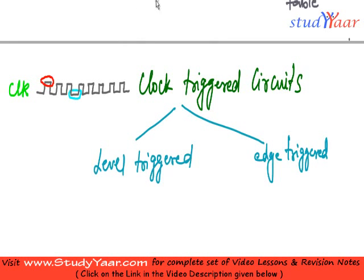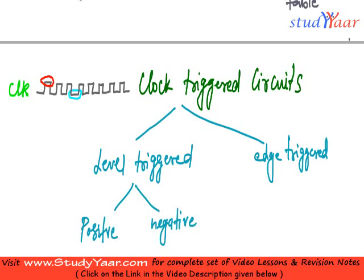So we have seen you can have either positive level-triggered or negative level-triggered. The red color indicates positive level-triggered and the other color indicates negative.